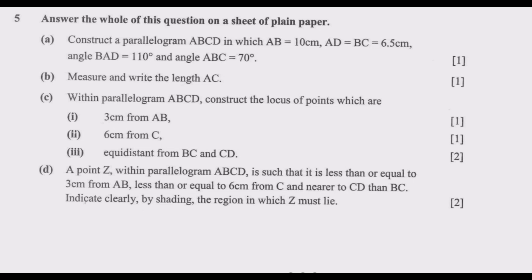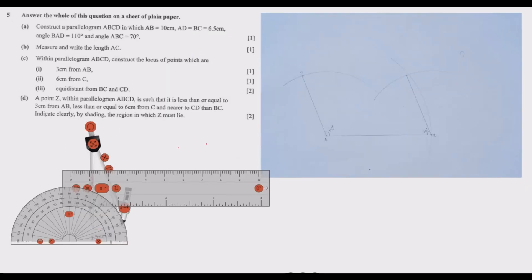So basically these are the questions that we need to answer. Let us move straight to question A, where we are required to construct parallelogram ABCD. To answer this question, you need a ruler, a compass, and a protractor.